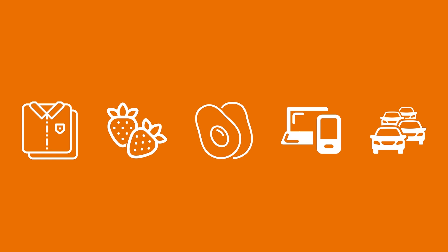We wear clothes made in Vietnam, we eat strawberries from Chile, avocados from Mexico, we use computers and phones with chips made in China, and we drive cars with parts imported from Canada. We're able to enjoy all these wonderful things from different parts around the world because all countries have extensive trading relationships with other countries.